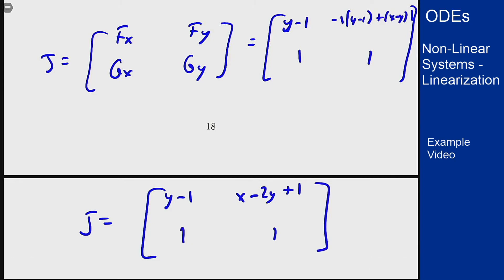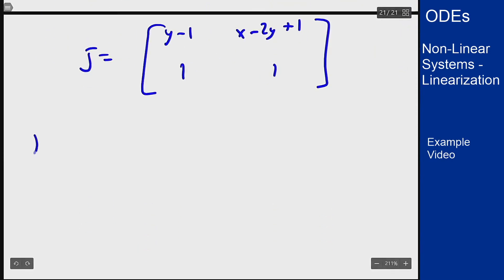Now we have two points, (-1, -1) and (-3, 1). If I plug in (-1, -1) I get -1 minus 1 is -2, -1 plus 2 plus 1 is 2, 1 and 1.